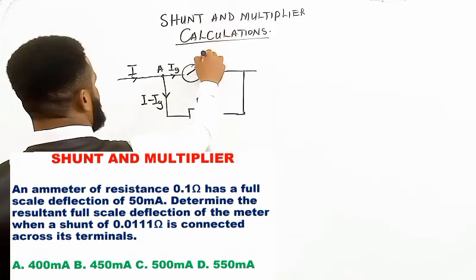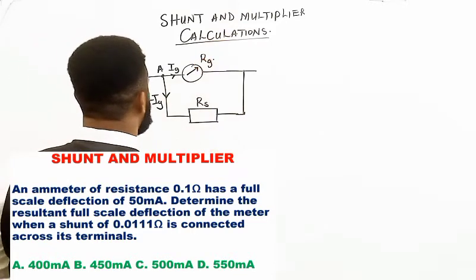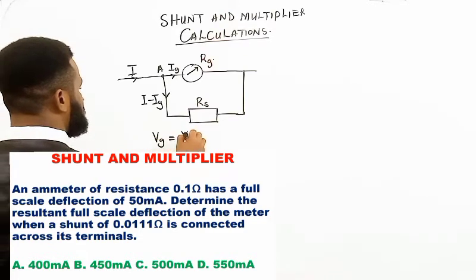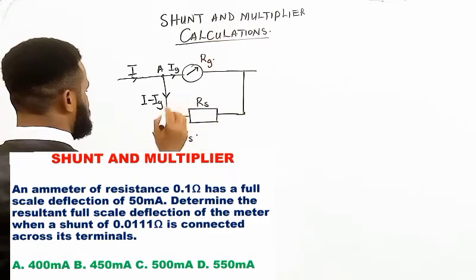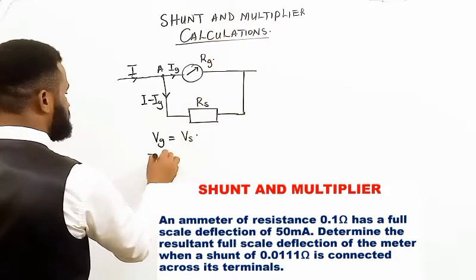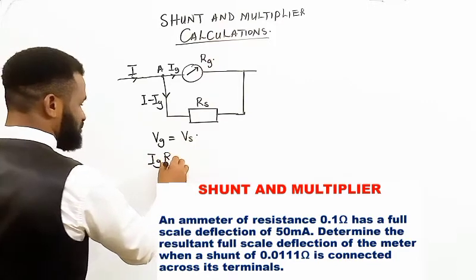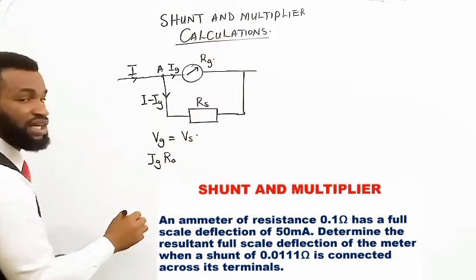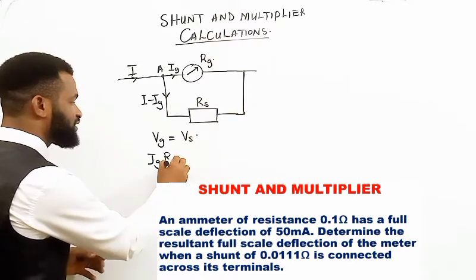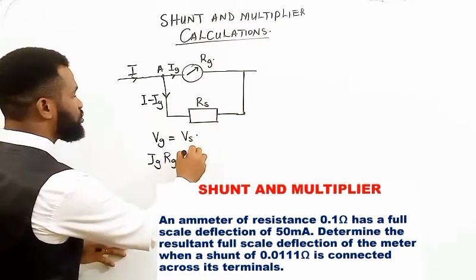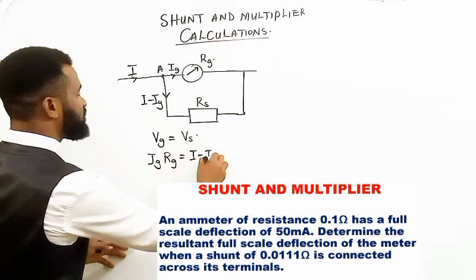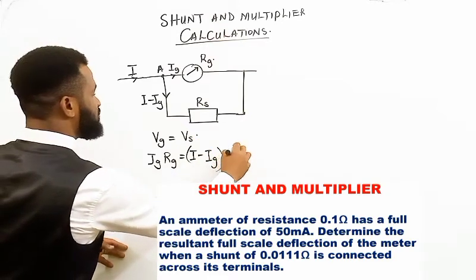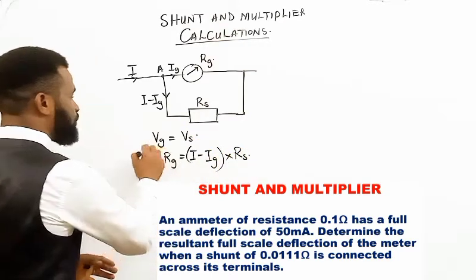The voltage across the galvanometer must equal the voltage across the shunt. So the current of the galvanometer times the resistance of the galvanometer equals the current of the shunt times the resistance of the shunt: Ig × Rg = Is × Rs.